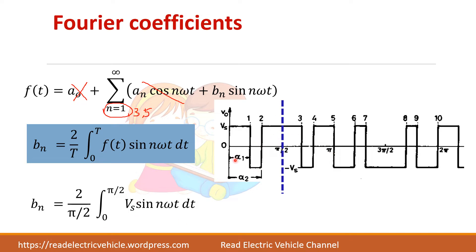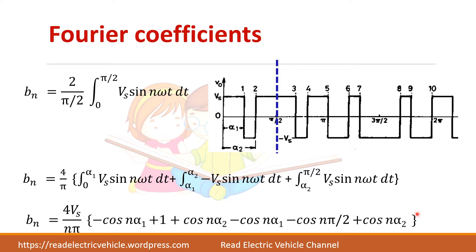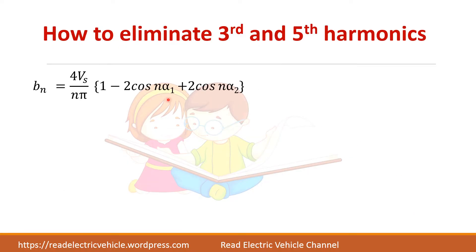Looking at the waveform, from 0 to alpha 1 you have plus Vs, from alpha 1 to alpha 2 you have minus Vs, and from alpha 2 to pi by 2 you have plus Vs. So you split the integral accordingly: 0 to alpha 1 gives Vs, alpha 1 to alpha 2 gives minus Vs, and alpha 2 to pi by 2 gives plus Vs. Let us simplify this to get the expression for BN.